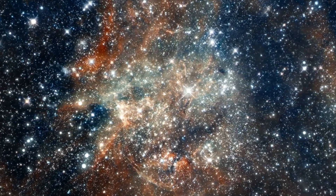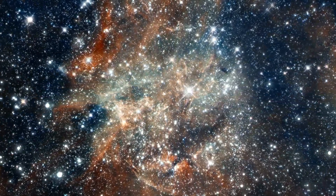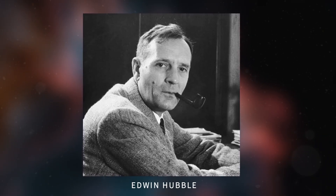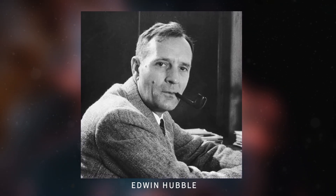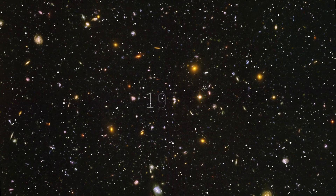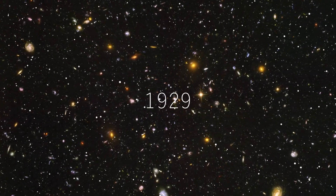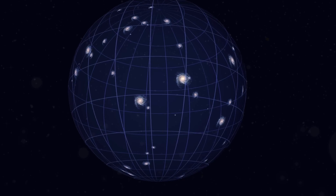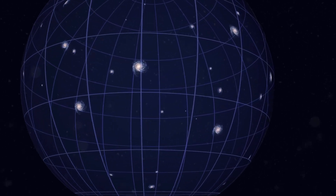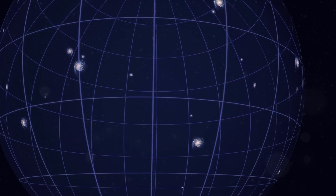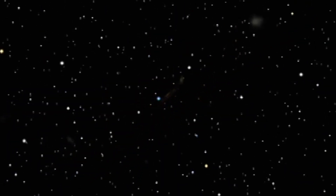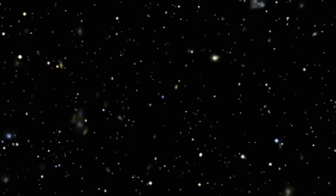The expansion rate of the universe, also known as the Hubble constant, derives its name from astronomer Edwin Hubble, who first observed the universe's expansion in 1929. This constant denotes the rate at which the space between galaxies is stretching, contingent upon their distance and velocity. As galaxies recede further from us, they accelerate away due to the expansive nature of space.